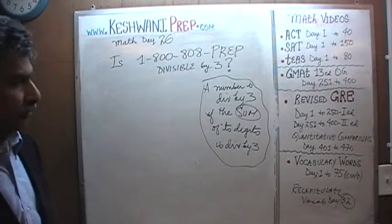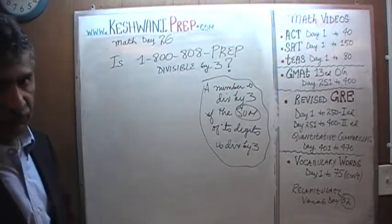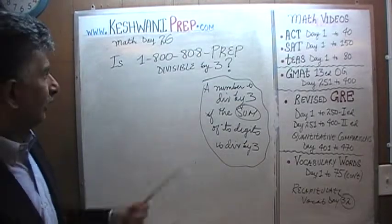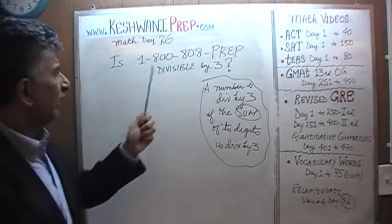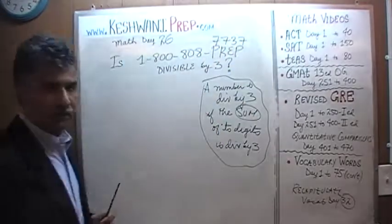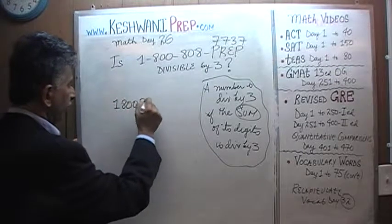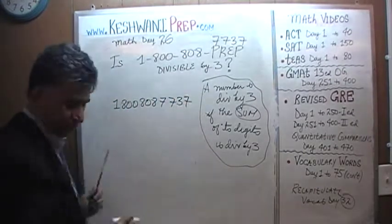Here we have a question. The question is, is 1-800-808-PREP, which happens to be my phone number, is that divisible by 3? 1-800-808-PREP translates into 7737. So let's find out, shall we? 1-800-808-7737.